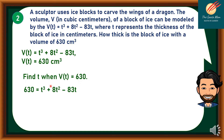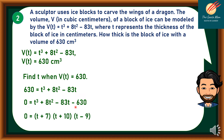We will equate b(t) = 630, which gives us t³ + 8t² − 83t = 630. Subtracting both sides by 630, we get 0 = t³ + 8t² − 83t − 630. Applying your factoring techniques — you can use factoring by grouping or synthetic division — the factors are 0 = (t + 7)(t + 10)(t − 9).